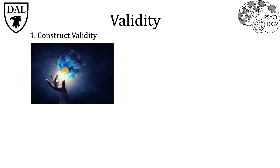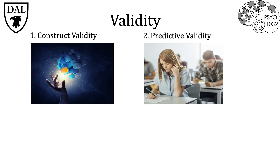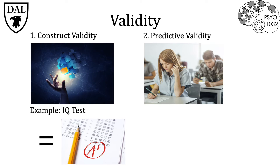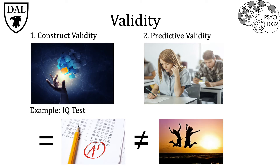Construct validity is asking the question: does a test measure the concept or construct it's claiming to measure? For example, does an IQ test actually measure intelligence? The second subset is predictive validity, asking how well do IQ test results positively correlate to real-world outcomes. Do IQ scores correlate with school grade achievements and job success? In terms of predictive validity, the IQ test actually has a very high correlation with school grades all the way from kindergarten to university. However, it does not predict happiness or satisfaction throughout the lifespan.